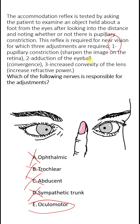The parasympathetic fibers also supply the ciliary muscle, and when the ciliary muscle contracts it causes an increase in the convexity of the lens due to relaxation of the zonular fibers. These fibers are carried by the oculomotor nerve but are not derived from its main motor nucleus in the brainstem; instead they are derived from a nearby nucleus called the Edinger-Westphal nucleus, and the fibers accompany the oculomotor nerve.